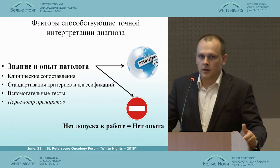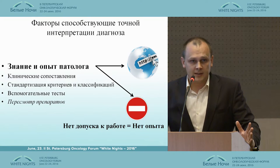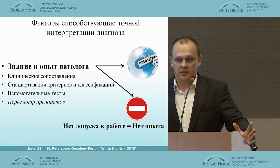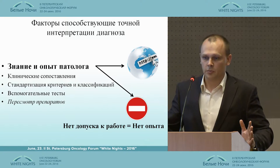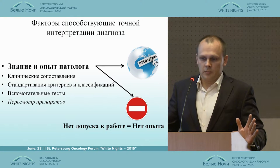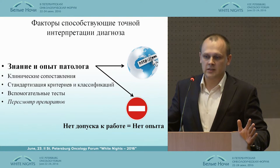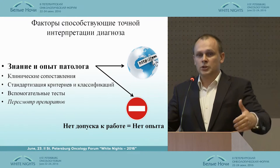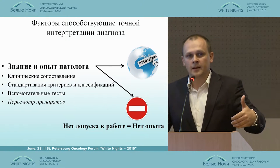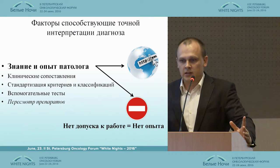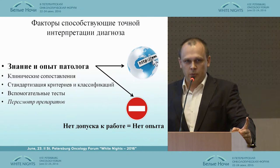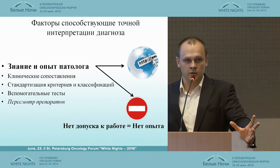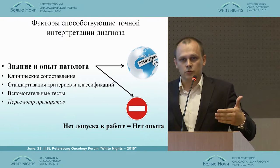What result does it have for a patient? According to the authors who suggested these recommendations, the factors that help you to rightly interpret the diagnosis are the experience and expertise of pathologists — these are the key elements. Then they compare the results, standardize and perform the test, and reconsider the microslides. Experience and expertise are the key thing.